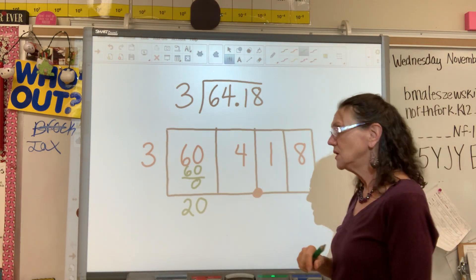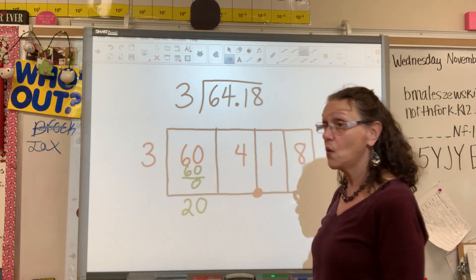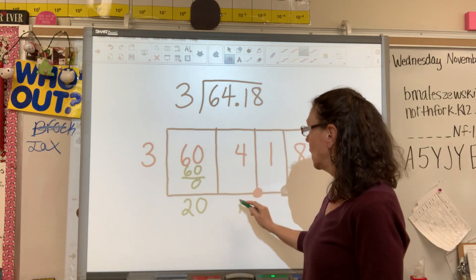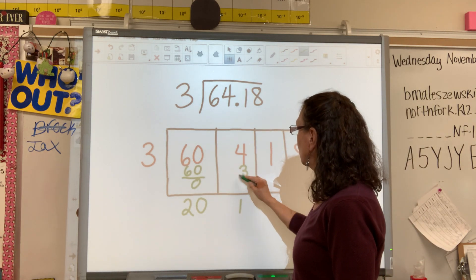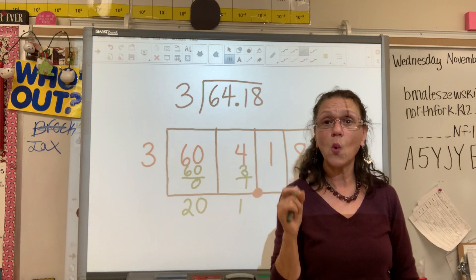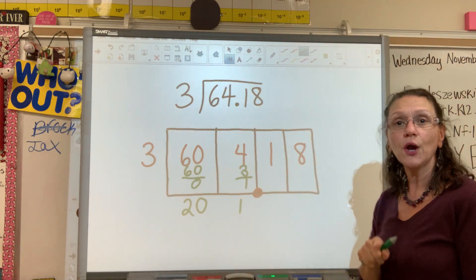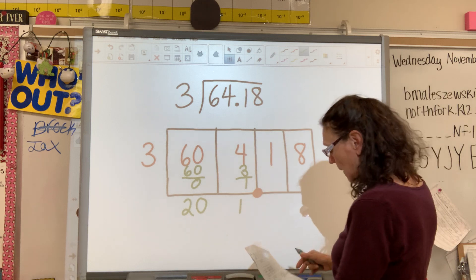So I go to my next box. How many times is three going to four? It goes in once. One times three is three. When I subtract that, I have one left over. That's going to carry forward into my next box.